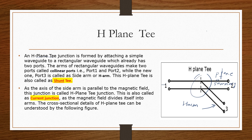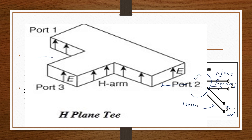The axis of the side arm is parallel to the magnetic field. This junction is called T junction. It is also called current junction because the magnetic field is divided into arms — if port 3 is my input, then my magnetic field is divided into port 1 and port 2. When power enters from port 3, it is divided equally and in phase.